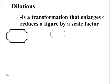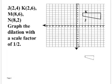Dilations is a transformation that enlarges or reduces a figure by a scale factor — it makes a figure bigger or smaller. If you remember from a couple chapters ago, we had figures on a graph and we would reflect them, flip them over an x-axis or y-axis, or move them around. Dilations is another thing like that, where we make the figure larger or smaller based on a scale factor.